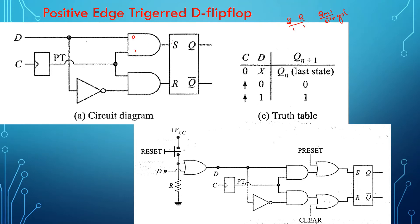When D is equal to 0, this input is 0 and the other is 1; 1 into 0 is 0, and R becomes 1. When R is 1 the flip-flop resets, meaning output is 0. When D is equal to 1, this becomes 1 into 1 and the other is 1 into 0, so S goes high. When S is high the flip-flop goes to set state, meaning output is 1, as indicated in the truth table.